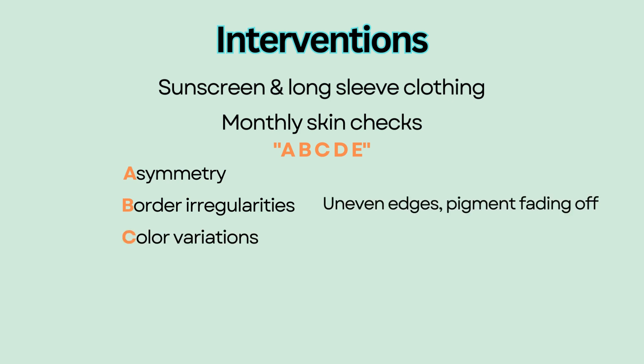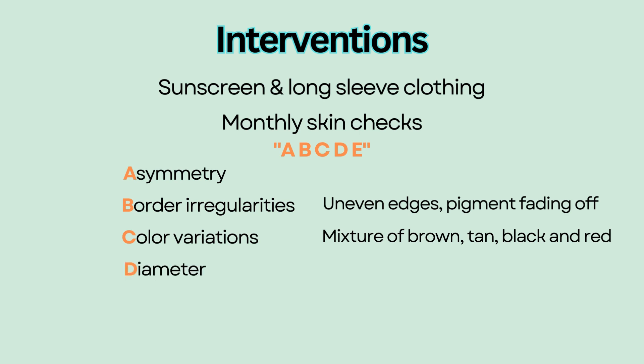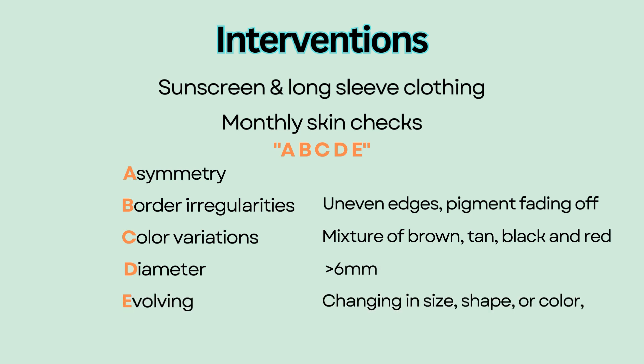C stands for color variations, such as a mixture of brown, tan, black, and red. D stands for diameter — any skin lesions that are bigger than 6 millimeters. E stands for evolving lesions that are changing in size, shape, or color.